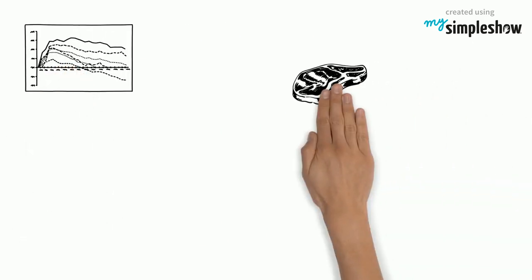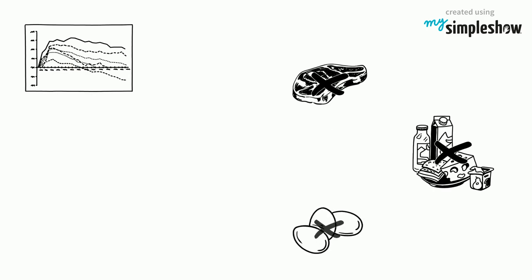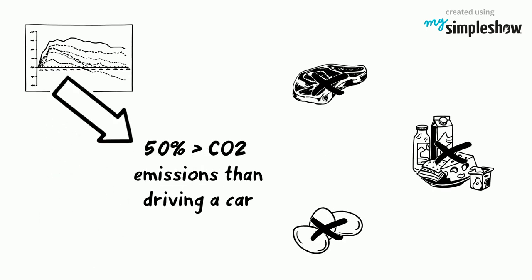Studies show that cutting meat, dairy, and eggs out of your diet reduces 50% more carbon emissions than driving a car. This is because of all the fuels burned in order to process our food.